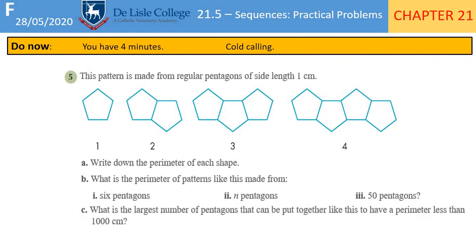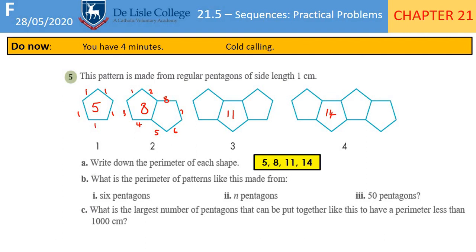Have a go at the pentagon perimeter question — read it really carefully, then pause the video. The pattern is made from regular pentagons of side 1 centimetre. The first perimeter is 5. Then counting carefully — the shared side inside is not part of the perimeter — the next term is 8, then 11, then 14. We're adding 3 each time. The perimeter for 5 pentagons is 17, for 6 pentagons is 20.